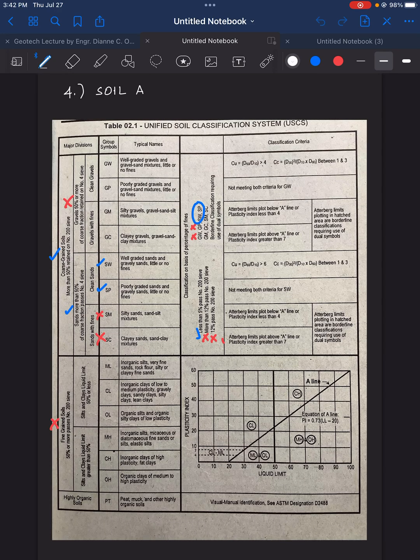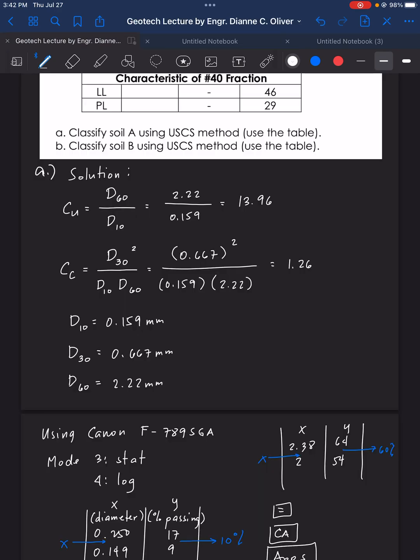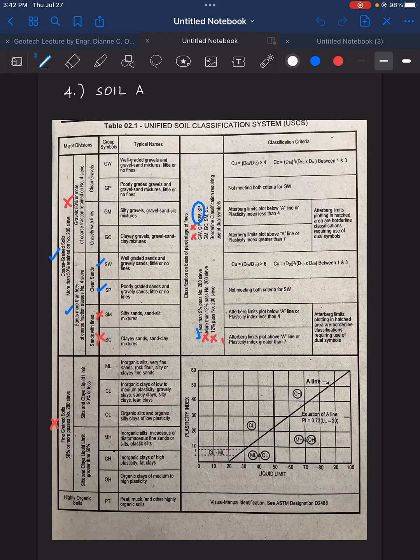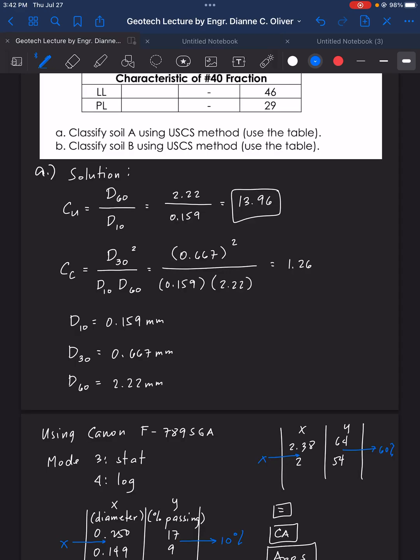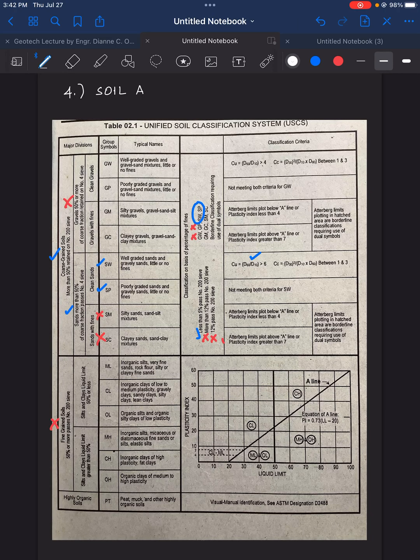Going back to our table, what's the value for CU? Our CU value is 13.96. Is it greater than 6? Yes, it's greater than 6. How about the value for CC? The value for CC here is 1.26. Is it in between 1 and 3? Yes, it's in between 1 and 3.